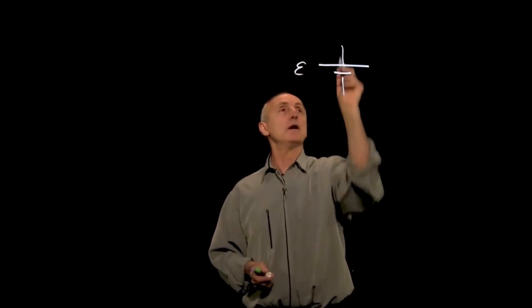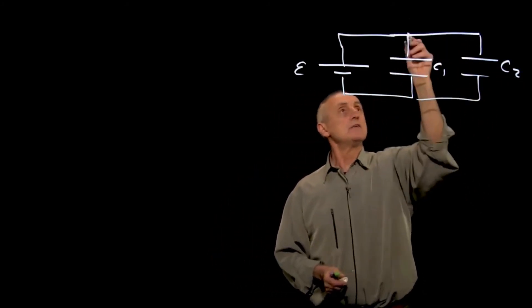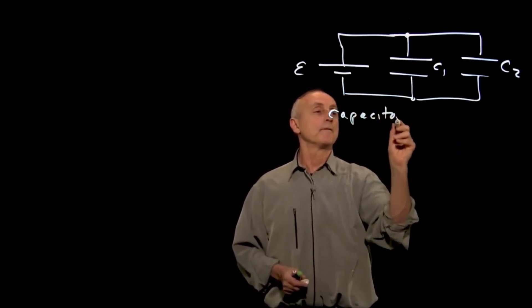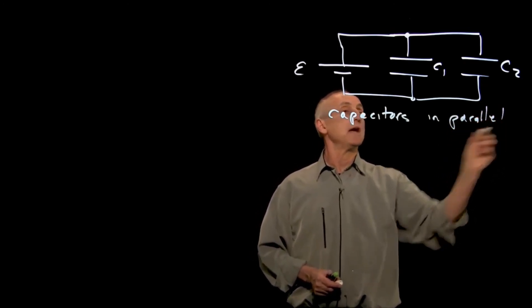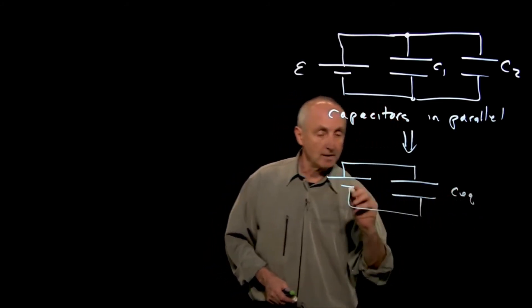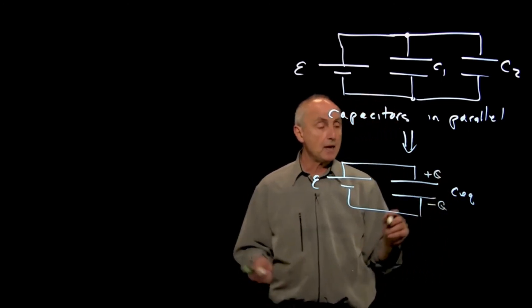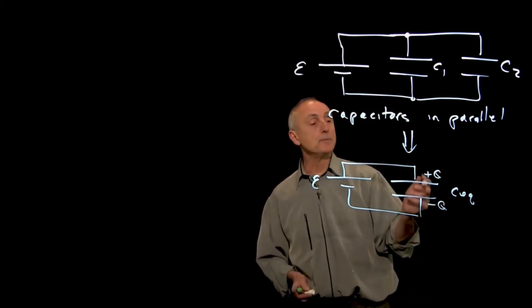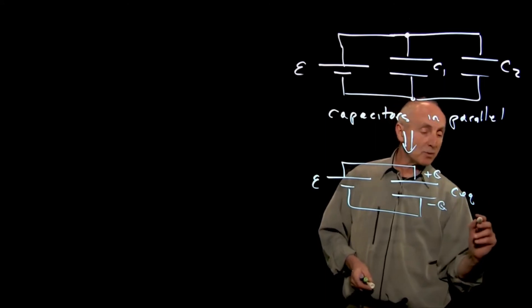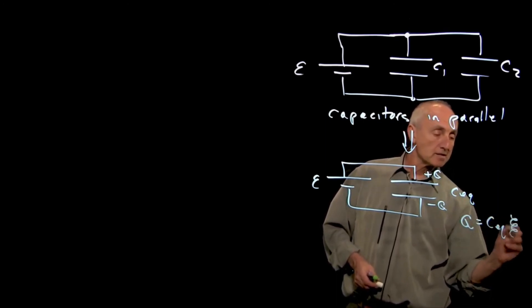In the same way that we reduce networks with resistors connected in series and parallel, we now consider a network with two capacitors connected in parallel: C1 and C2 with a seat of EMF. We'd like to find the equivalent capacitance, reducing the network to one equivalent capacitor. On the equivalent capacitor we have plus q and minus q, and we can write that charge q equals the equivalent capacitance times the EMF.